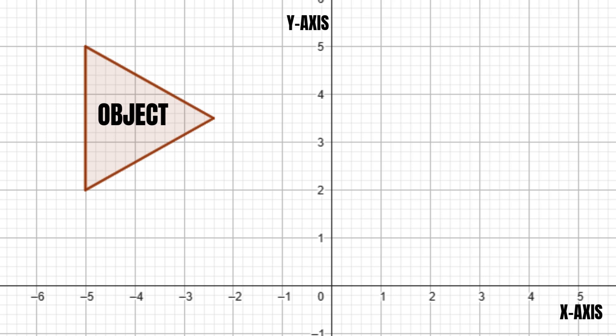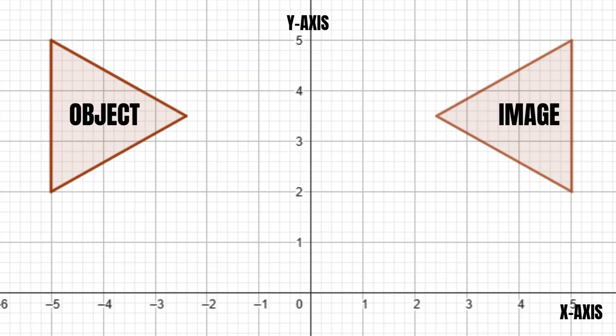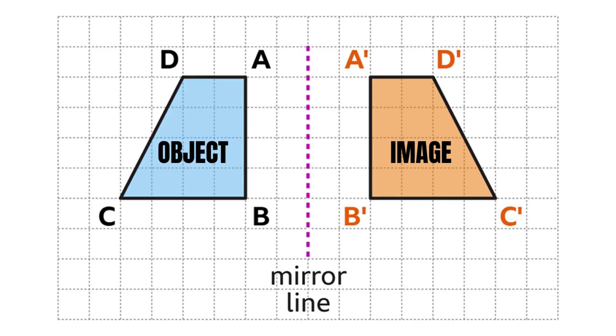It's the same with geometric shapes. For example, when you reflect this triangle in the y-axis, the line acts like a mirror. You can reflect all types of shapes, as long as you've determined the line you want to reflect on.